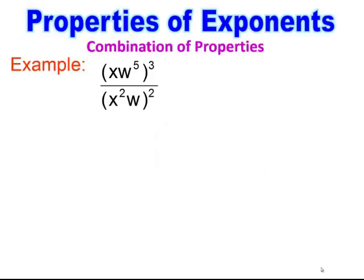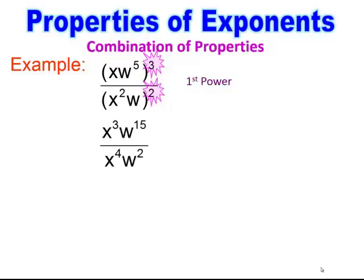Now we have something similar but different — I have a quantity on top raised to a power and a quantity on the bottom raised to a different power. In this type of problem, I can't simplify first because I have to take those powers on the outside and distribute them to everything inside. So you have to know the difference between the two types of problems. In this case, I take the power on the outside and give it to everything inside: on the top I get x to the 3rd, w to the 5th, and on the bottom I get x to the 4th, w squared. Now I can simplify.